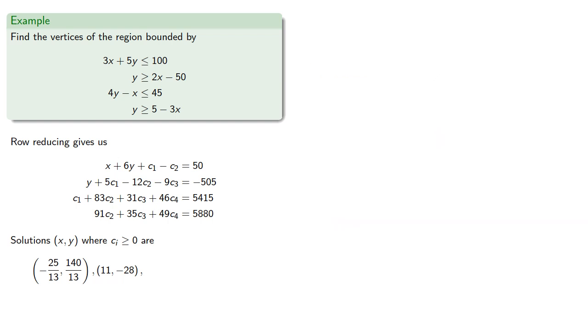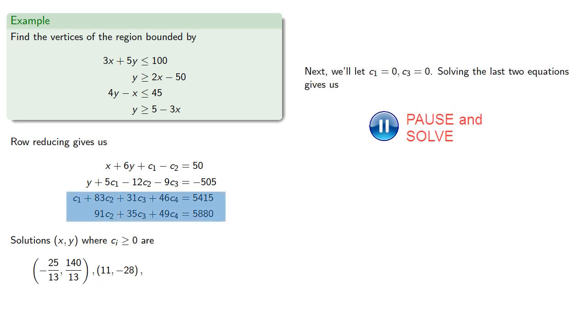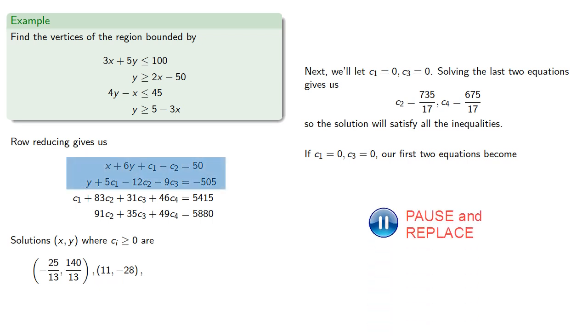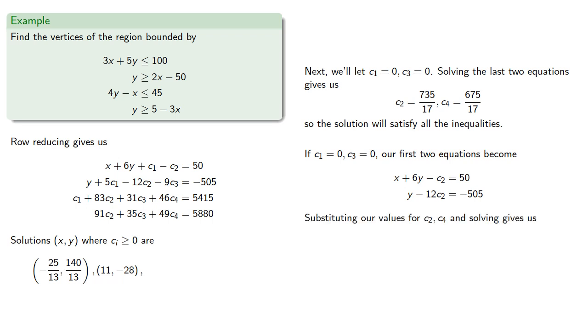Next, we'll let c1 and c3 be 0. And solving the last two equations gives us... So, the solution will satisfy all the inequalities. Again, if c1 and c3 are 0, our first two equations become... Substituting out our values for c2 and c4 and solving gives us... Which will be the intersection of the first and third boundary lines.